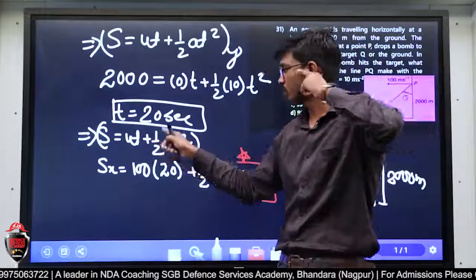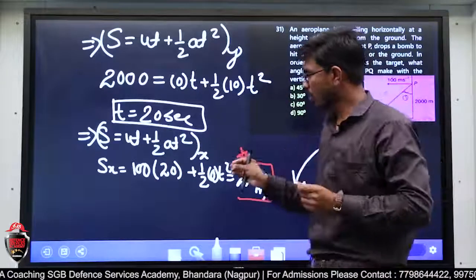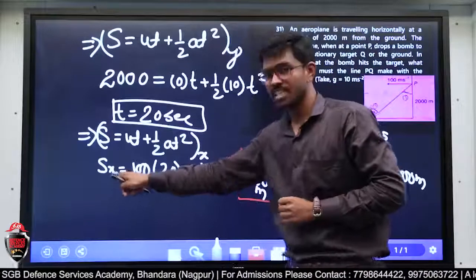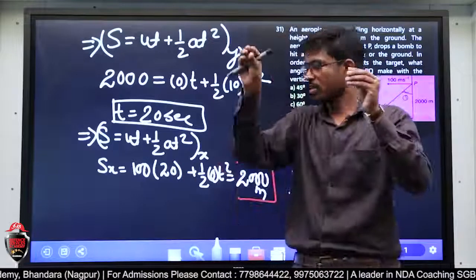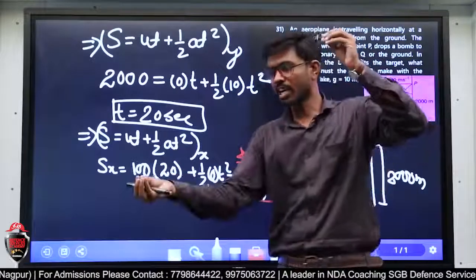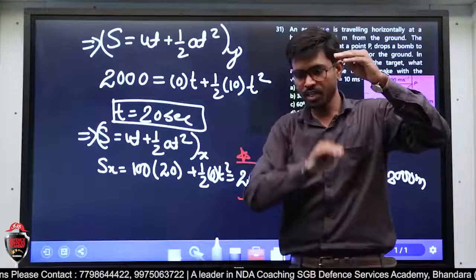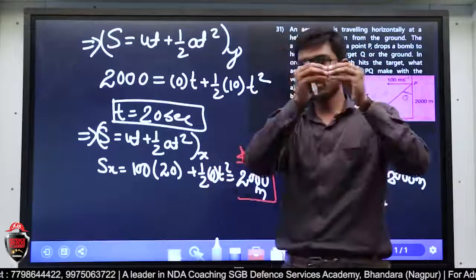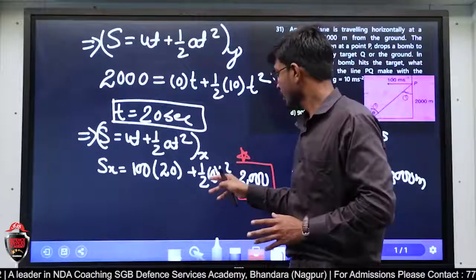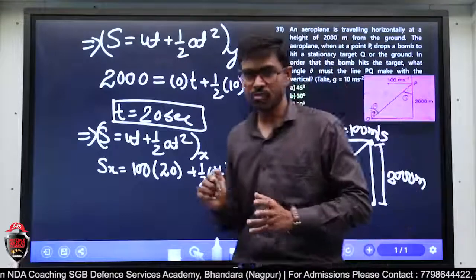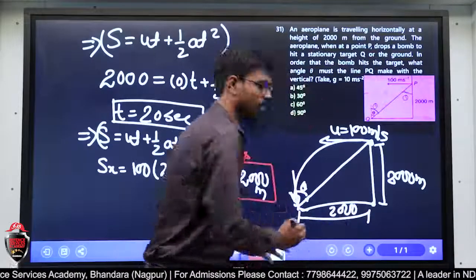20 seconds लगने के बाद, s = ut + ½at² same formula लगाया x के लिए। Displacement in x direction निकालना है। Acceleration in x direction है नहीं — velocity of projection constant होती है। Value put करके मैंने 2000 meter answer निकाल लिया। तो अब 2000 height और 2000 horizontal distance मिल गया।